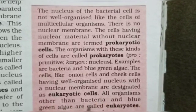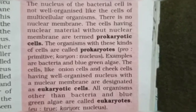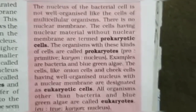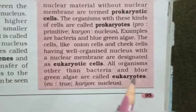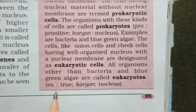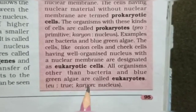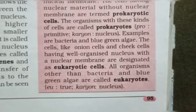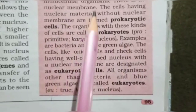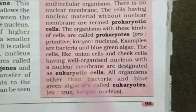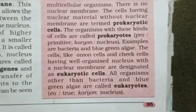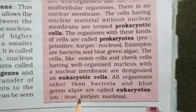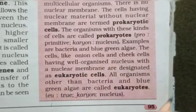Organisms are classified into prokaryotes and eukaryotes. Bacteria and blue-green algae are prokaryotes — cells that do not have a well-defined nucleus. All organisms other than bacteria and blue-green algae are called eukaryotes. This is a very important distinction and should be read carefully.